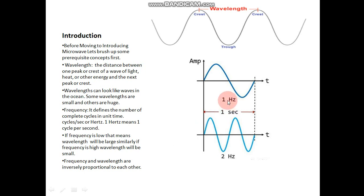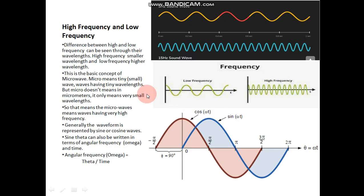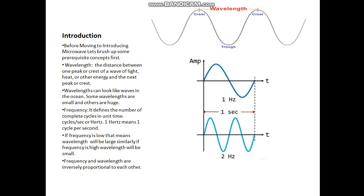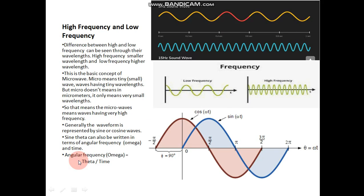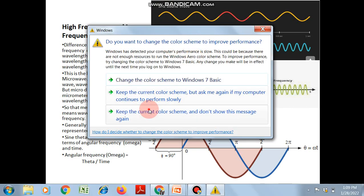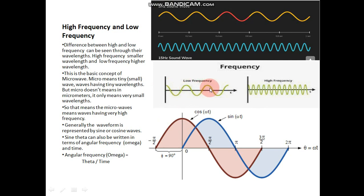Similarly, now consider high frequency and low frequency. According to the wavelength, wavelength and frequency are inversely proportional to each other — when one increases, the other decreases. You can see here: this wavelength is more, the distance between two crests or two troughs is greater, so the frequency of that wave will be less. For example, this is 5 hertz and this is 15 hertz. So if frequency increases, wavelength decreases. More wavelength means low frequency; smaller wavelength means high frequency.